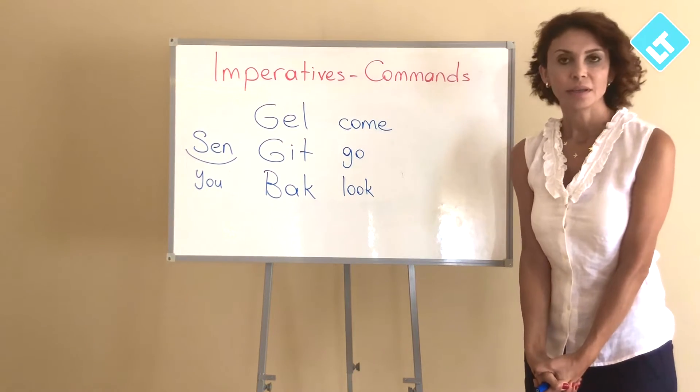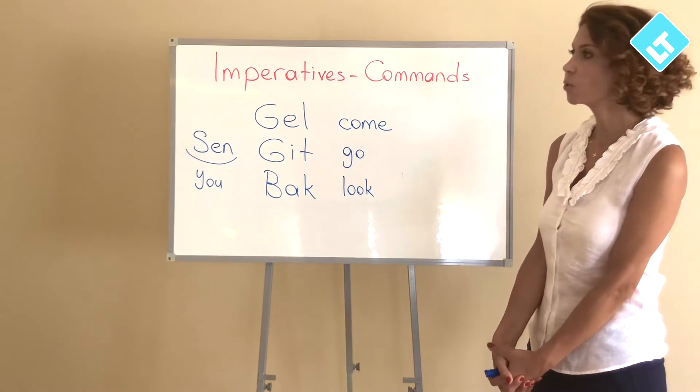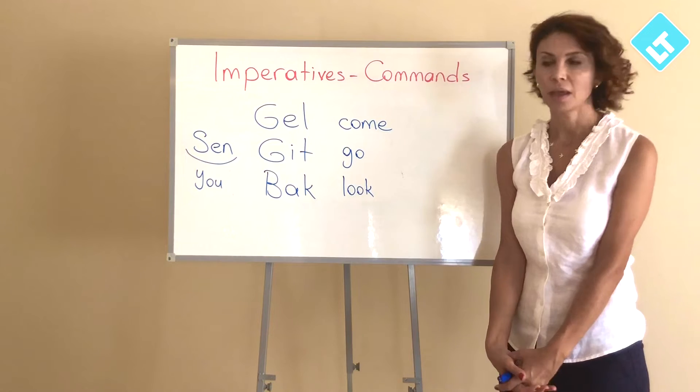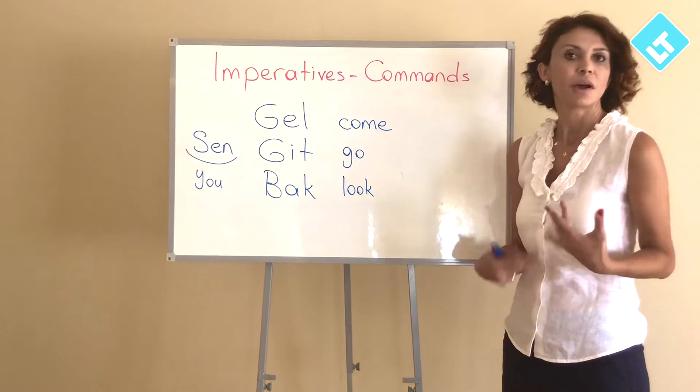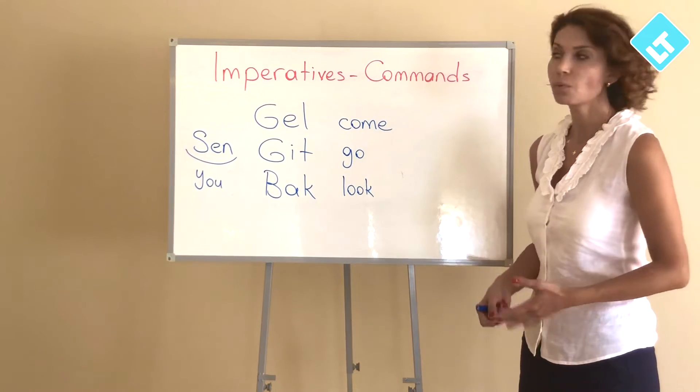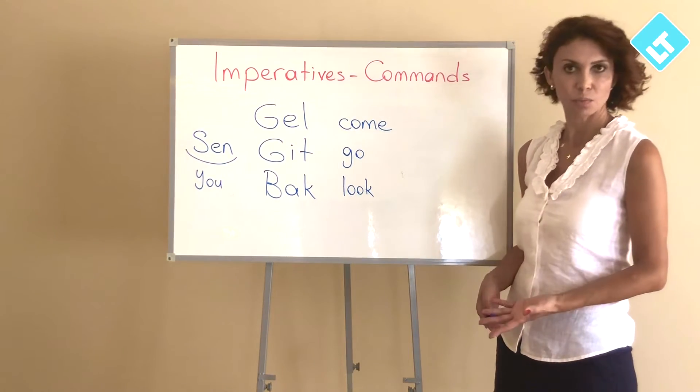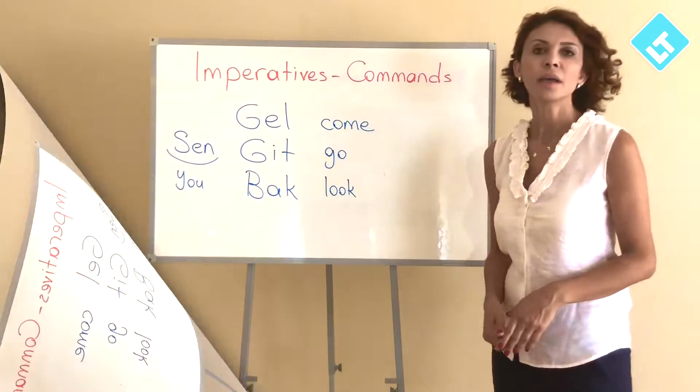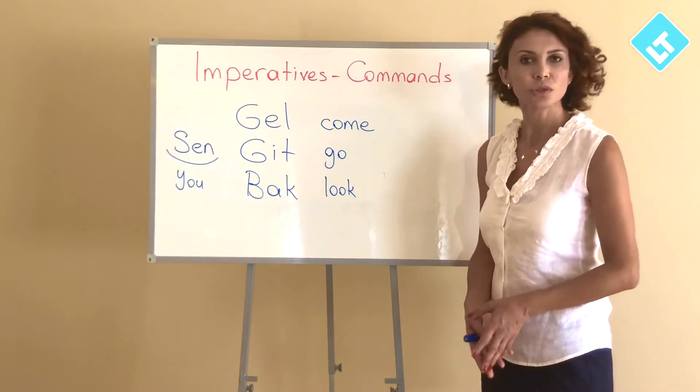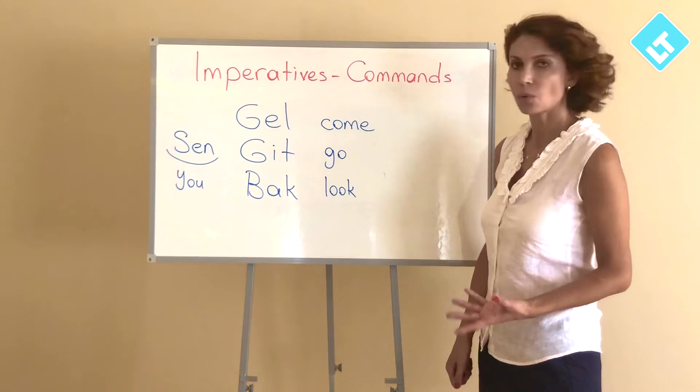So what is imperative? The imperative form is used to order someone to do something. We mainly use it for giving direct orders, suggestions, warnings, or comments to a second person which is sen in Turkish. It's very easy to use. Just use the plain verb without suffix or change.